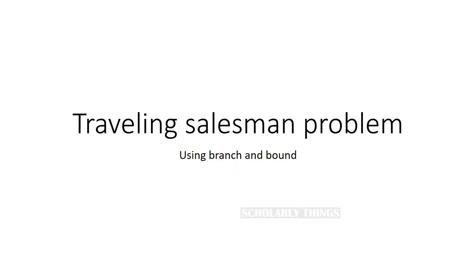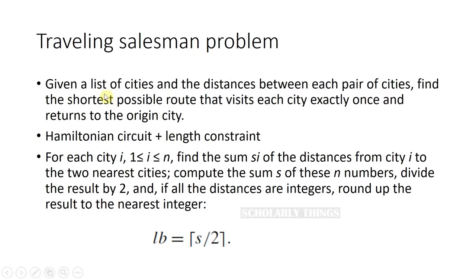Traveling Salesman Problem Using Branch and Bound. Given a list of cities and the distances between each pair of cities, find the shortest possible route that visits each city exactly once and returns to the original city.